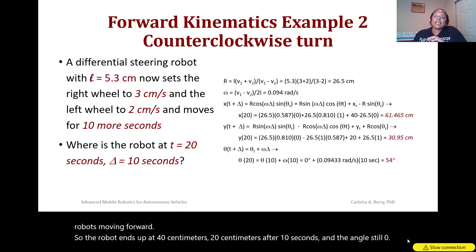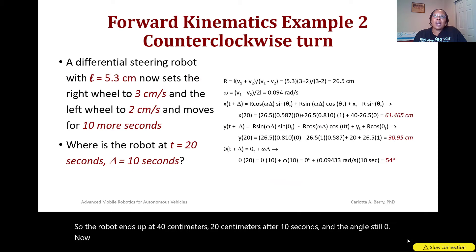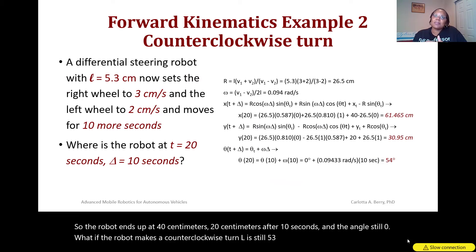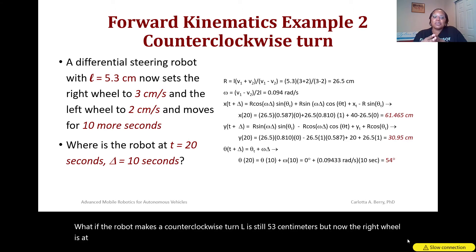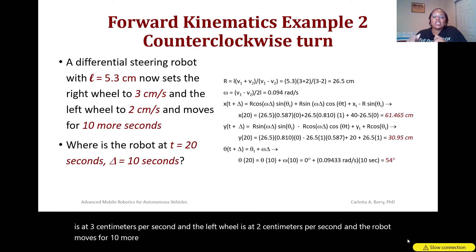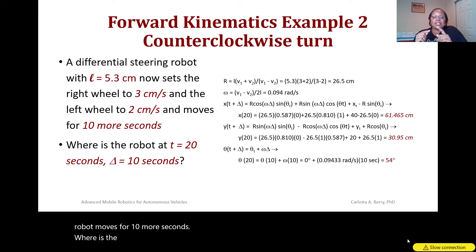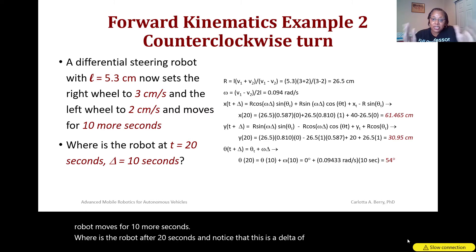Now, what if the robot makes a counterclockwise turn? L is still 5.3 cm, but now the right wheel is at 3 cm/s and the left wheel is at 2 cm/s, and the robot moves for 10 more seconds. Where is the robot after 20 seconds total? Note that delta is 10 seconds because it already moved for 10 seconds.